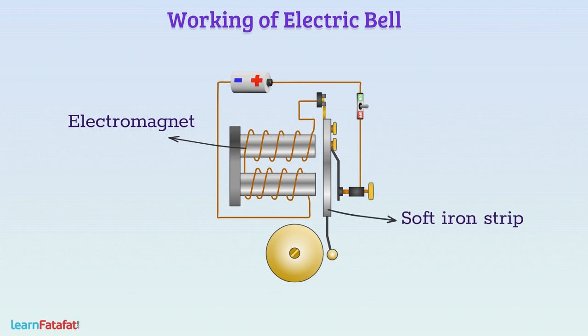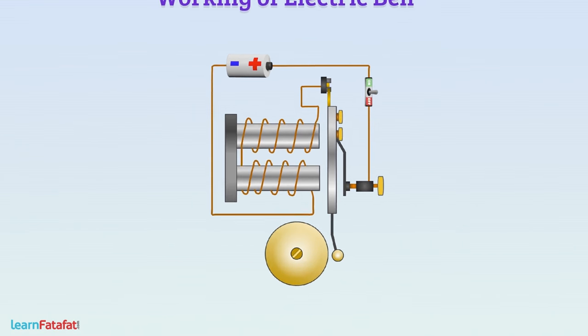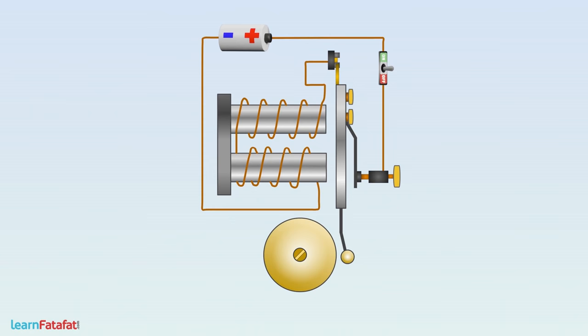A soft iron strip which has a hammer at one side is kept close to this electromagnet. Initially, the strip is kept in contact with the screw using a springy metal.